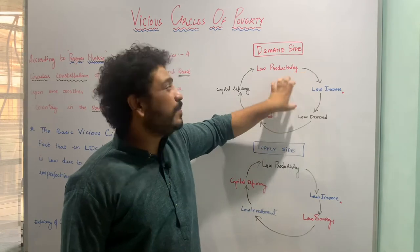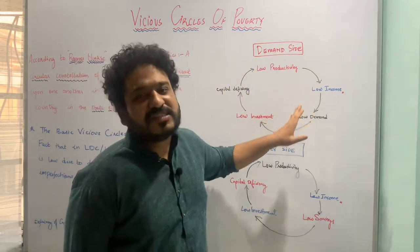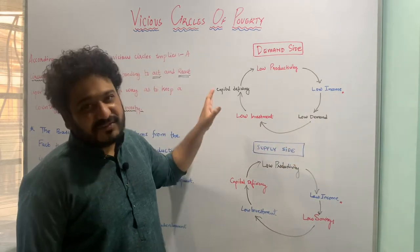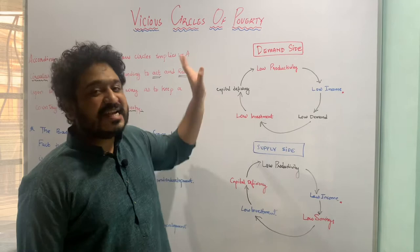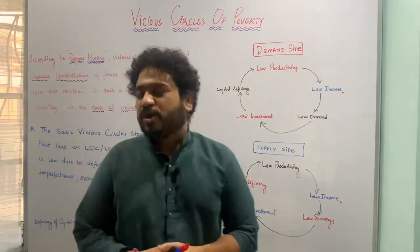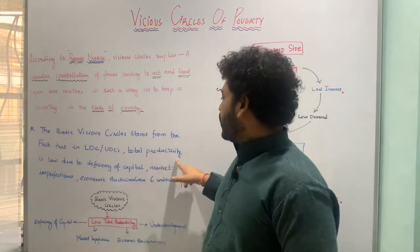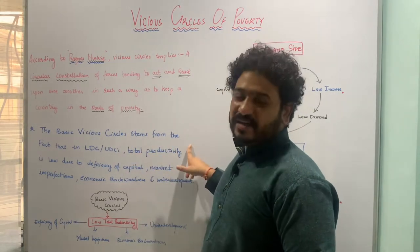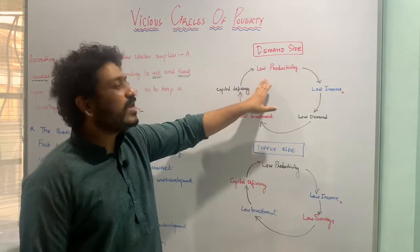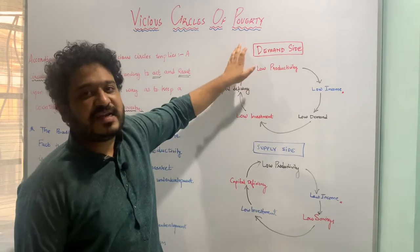So on the demand side: low real income translates into lower demand, which translates into low investments and therefore capital deficiencies, resulting in low productivity — which is the same basic vicious circle we identified earlier stemming from total productivity.